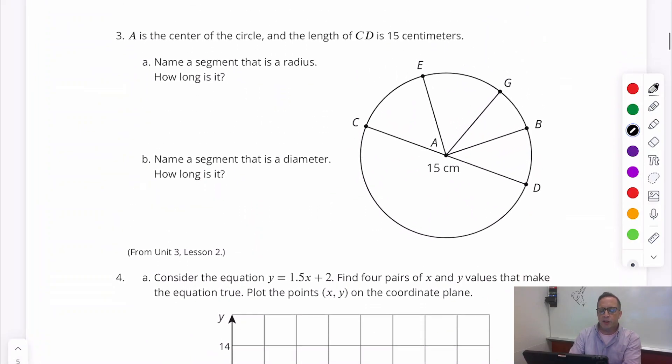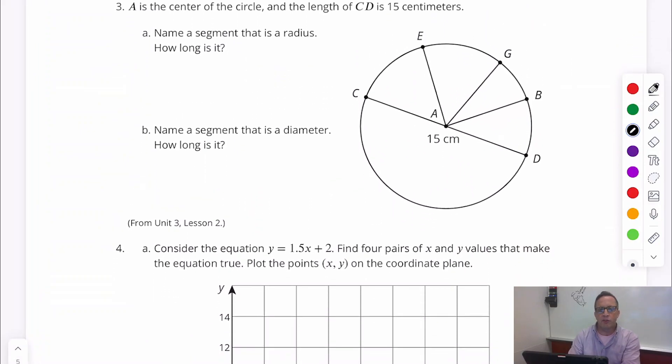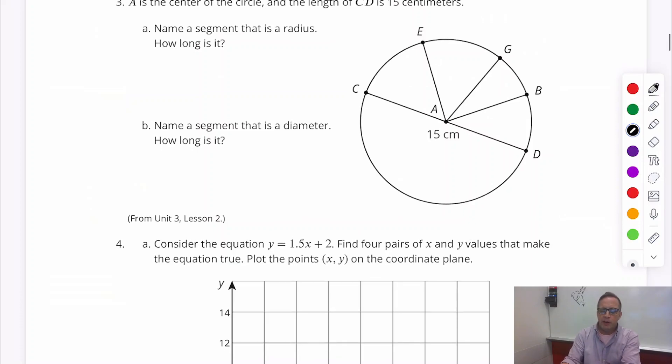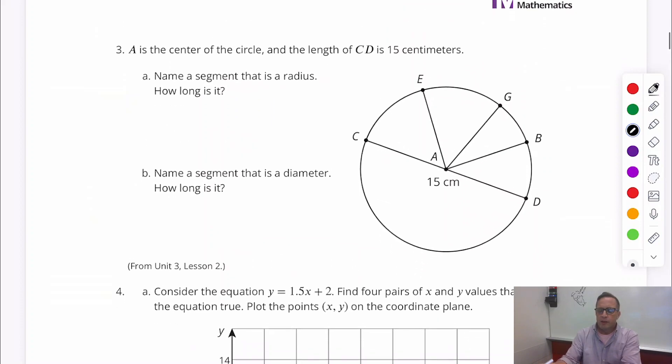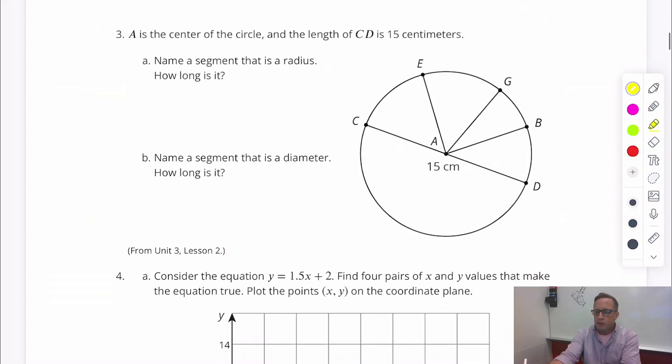For number three, it says A is the center of the circle. And the length CD is 15. Alright. So length segment CD is 15. Name a segment that is a radius. How long is it? Alright. There's a number of radius here. That's a radius. Right there. That's a radius. Right there. That's a radius. There's a radius all over the place. Throw a rock. You're going to hit a radius. Right there. That's a radius.